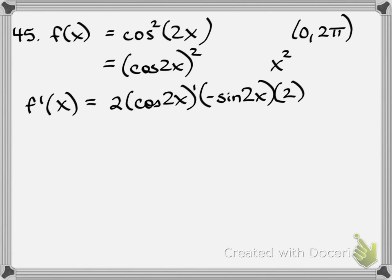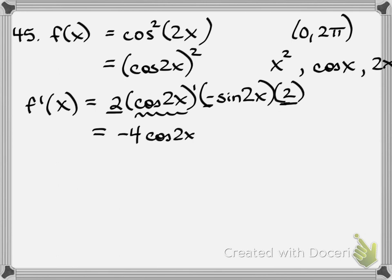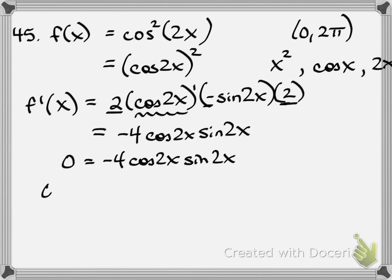That's a long chained chain rule — we had an x-squared problem, then the derivative of cosine, and then the inside angle. So it's 2 times negative 1 times 2, giving negative 4, times cosine(2x) times sine(2x). Critical numbers happen where the derivative equals zero or is undefined. Setting each factor equal to zero: the constant negative 4 doesn't give us anything.